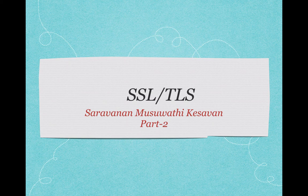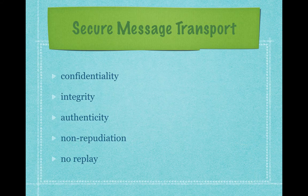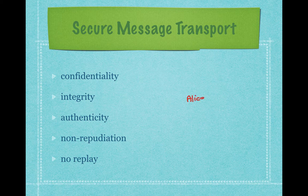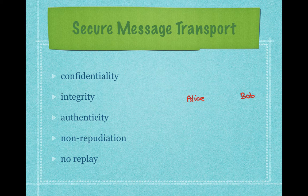Welcome to part 2 of the SSL TLS lecture series. Today we will start with the secure message transport. In cryptography, typically we will use two candidates: Alice and Bob. Whenever we deal with communication, we will talk about Alice and Bob. I will also use the same two people for my example. Let's say Alice wants to send a message to Bob over the network.